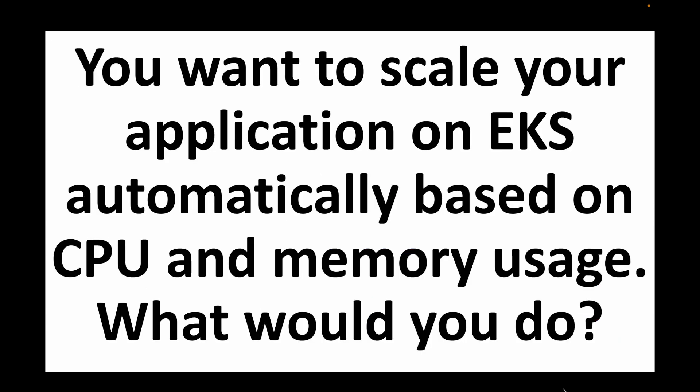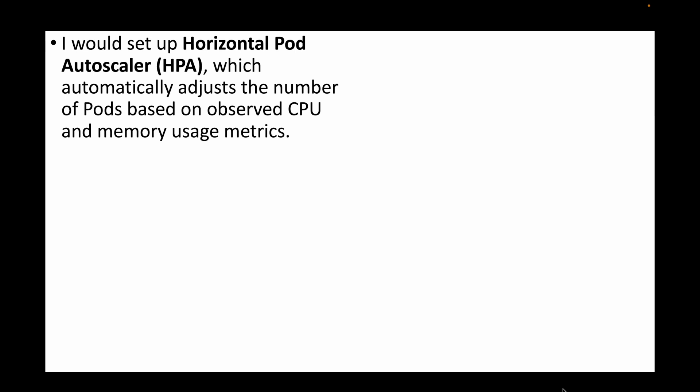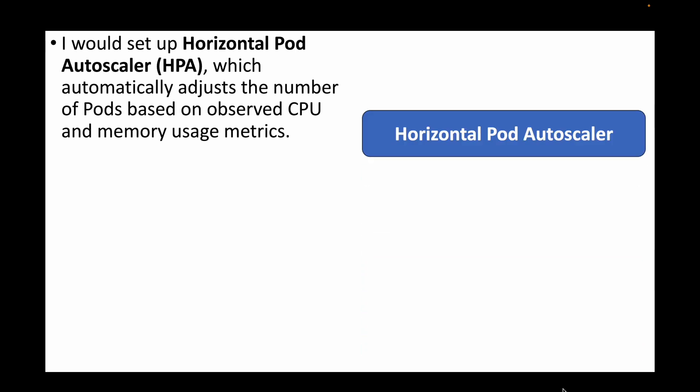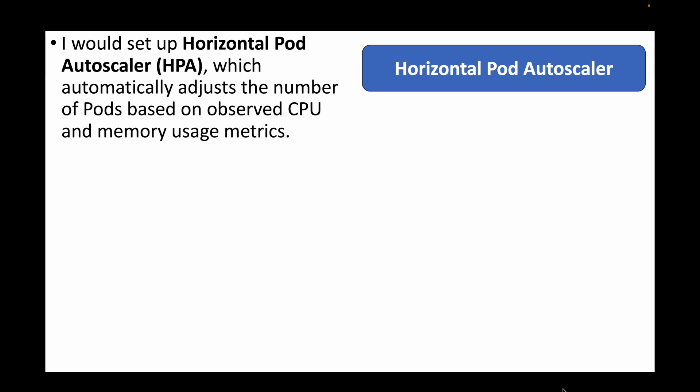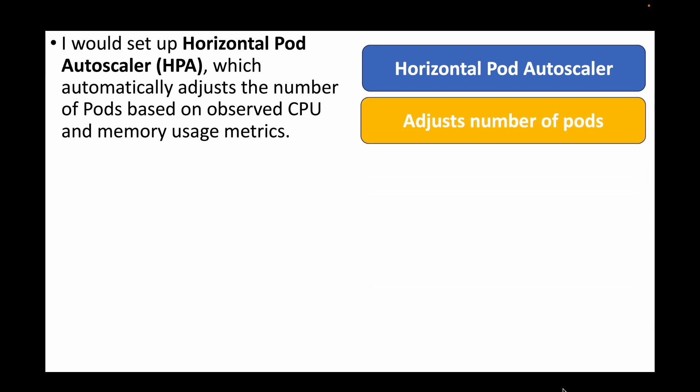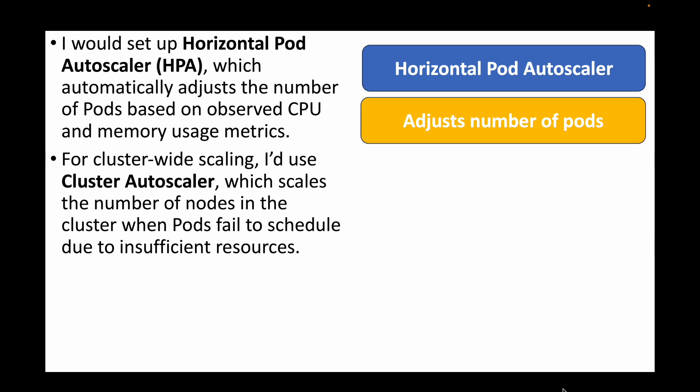The next question is: you want to scale your application on EKS automatically based on CPU and memory usage. What would you do? For this we can make use of HPA — the Horizontal Pod Autoscaler — which automatically adjusts the number of pods based on CPU and memory usage. If CPU is high, more pods are launched; if CPU is low, the number of pods is reduced.